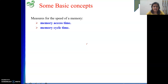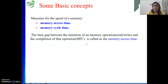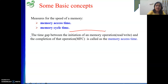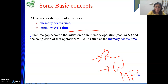Another important basic concept is memory access time and memory cycle time. Memory access time — as the word suggests — is the time required to access, meaning to perform a memory operation, whether read or write. The time gap between the initiation of an operation and the completion of that operation is the memory access time. Initiation of a memory operation means when you have given your read or write signal. From that time until you receive the MFC signal — that time gap is the memory access time.